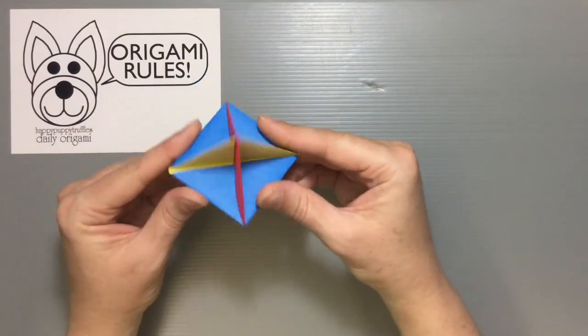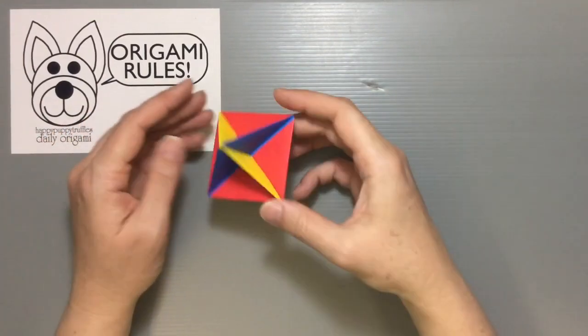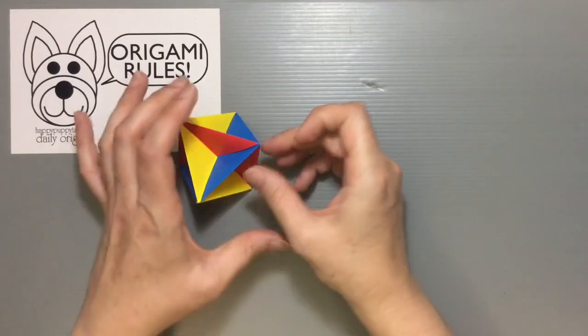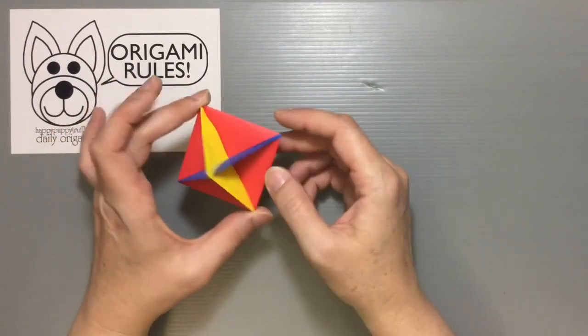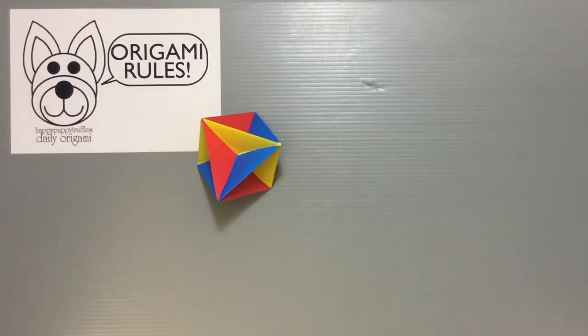That should give you a nice completed top. I suppose if you yank it or throw this across the room it might fall apart, but if you're just going to be hanging it delicately on a Christmas tree or something, it should look just fine and not have any troubles. So that is how you make a traditional origami ornament or top.